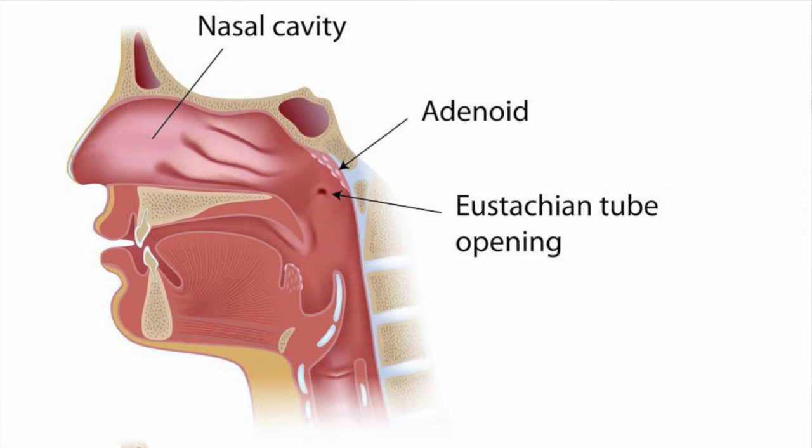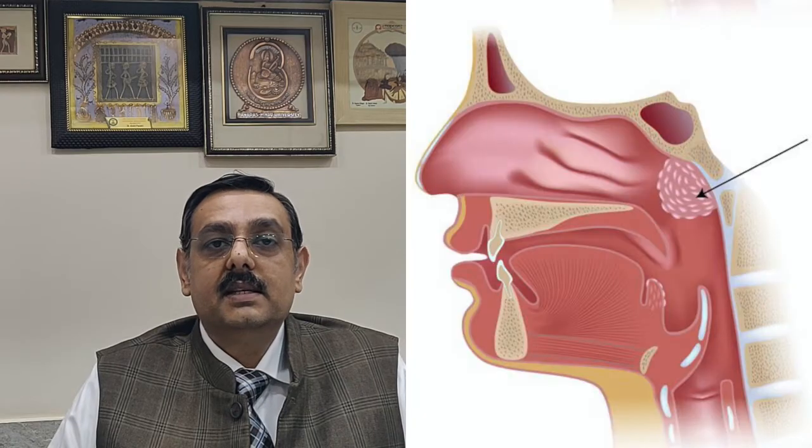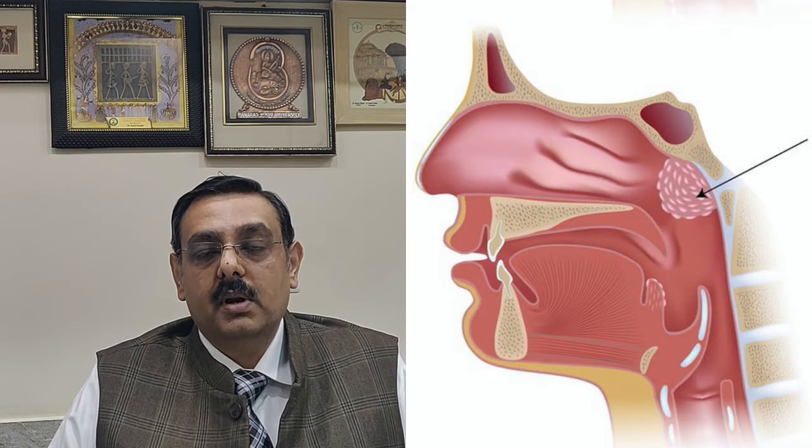Usually the Adenoids are small in size and they do not trouble the child. Rather, the tonsils and Adenoids protect the child and are part of the immune system. In some children, the Adenoids or the tonsils, or both, can increase in size and create problems.